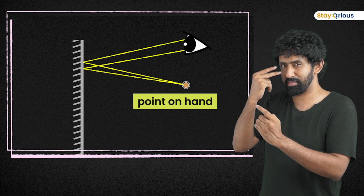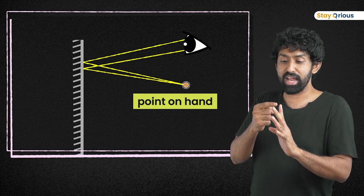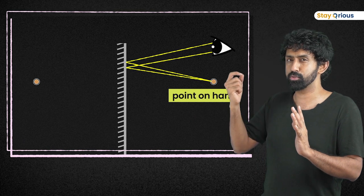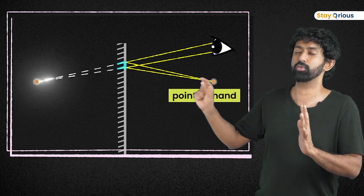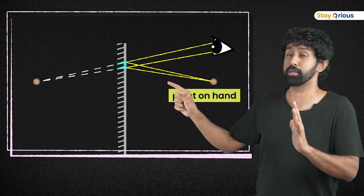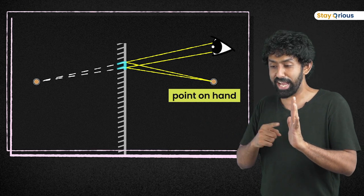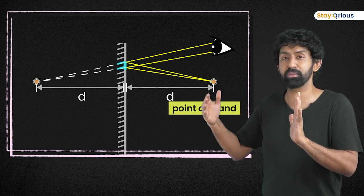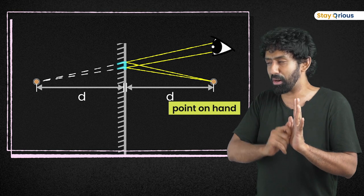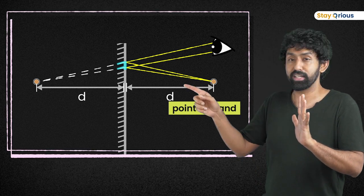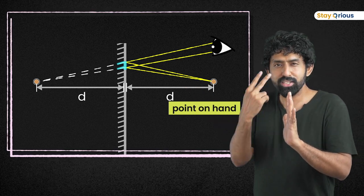These two rays are hitting my eye. Now, where will this point feel like it's coming from? There, right? Because my brain assumes it's coming straight from the object. So, I'll see an image of this point behind the mirror. How far away behind? Exactly the same distance as my hand is from the mirror. Why is that? Go think about it. So, this point forms an image there. Now, why do I need just two rays?